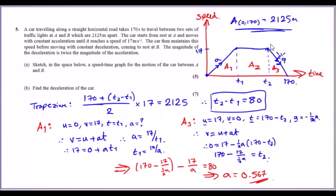Then it decelerates back to rest. The important point is that the magnitude of the deceleration is twice the magnitude of the acceleration. So if we call the acceleration A, the deceleration magnitude here is going to be minus half A — I think of it as the inverse: the deceleration is half of A.